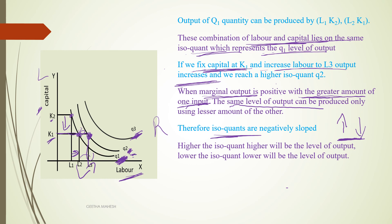Higher the isoquant, higher will be the level of output. Lower the isoquant, lower will be the level of output. Q1 represents 10 units, Q2 represents 20 units, and Q3 represents 30 units. So Q3 is greater than Q2, and Q2 is greater than Q1.